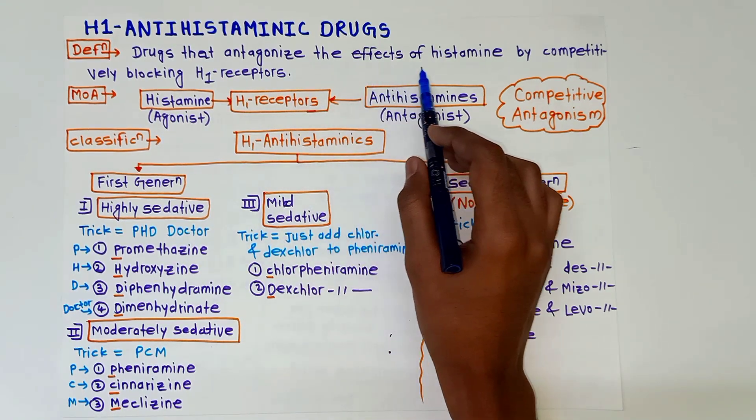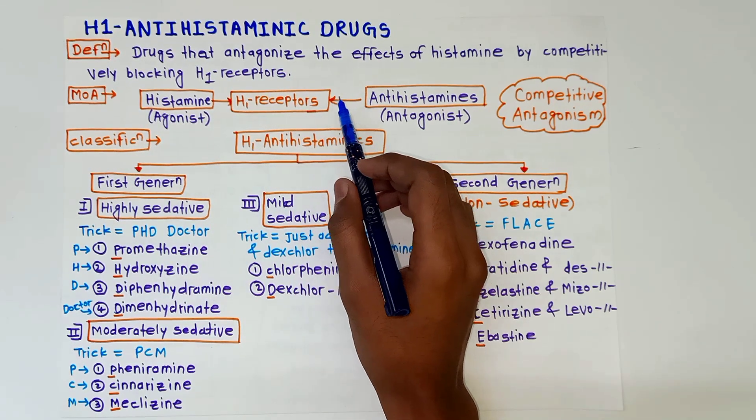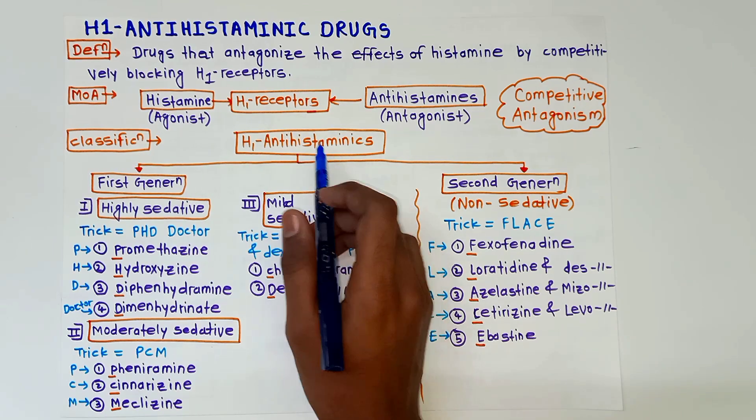So let's start. First of all, definition: the drugs that antagonize the effects of histamine by competitively blocking the H1 receptors. This is called H1 antihistaminic drugs.